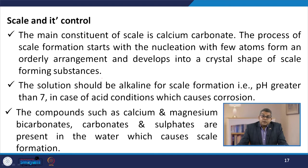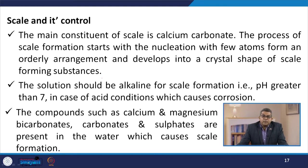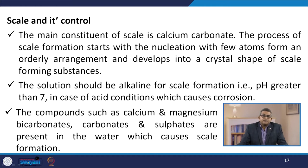Scale is a very crucial aspect in cooling tower operation. The main constituent of scale is calcium carbonate. The process of scale formation starts with nucleation — a few atoms form an orderly arrangement and develop into a crystal shape of scale-forming substances. The solution should be alkaline for scale formation, that is pH greater than 7; acid conditions cause corrosion. Compounds such as calcium and magnesium bicarbonates, carbonates, and sulphates present in water cause scale formation.